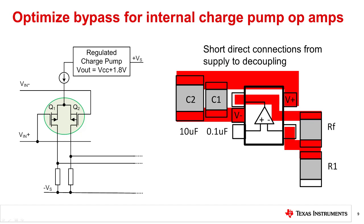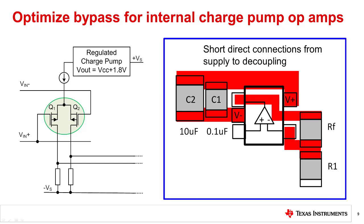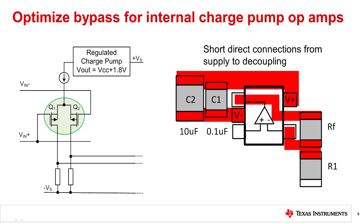In some cases, using a ferrite between the amplifier and other sensitive circuits may also help. The layout shown here takes special care to make sure the connections to the decoupling capacitors are short, direct connections. Also, we are using a bulk decoupling capacitor in parallel with the high frequency capacitor to further minimize charge pump noise from feeding out of the amplifier onto the supply.